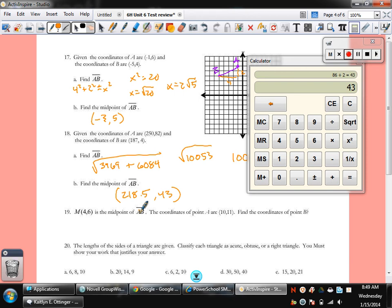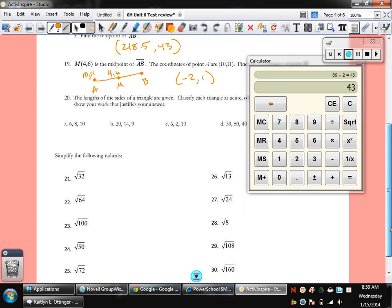M is the midpoint of AB. So, let's see. Let me give ourselves a segment to work with. We'll say this is M, A, B. M is 4, 6. A is 10, 11. To find B, from 10 to 4 is down 6. So, we go down 6 more. So, that's negative 2. From 11 to 6 is down 5. So, we go down 5 more and that's 1. So, negative 2, 1 is the point right there.